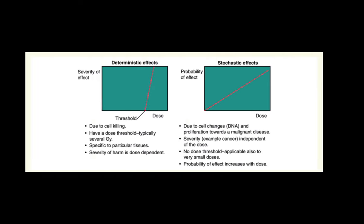These are the deterministic and stochastic effects — two effects of radiation. Deterministic effects are due to cell killing, have a dose threshold (typically several Gy), are specific to particular tissues, and severity of harm is dose-dependent. Stochastic effects are due to cell changes and proliferation toward malignant disease, are independent of dose threshold, and probability increases with dose.